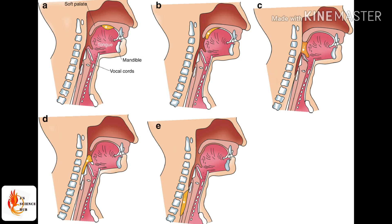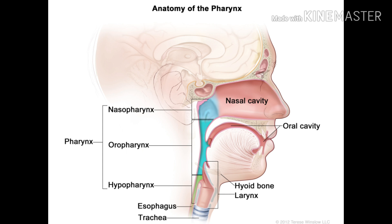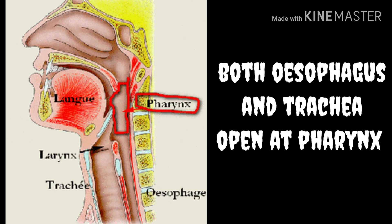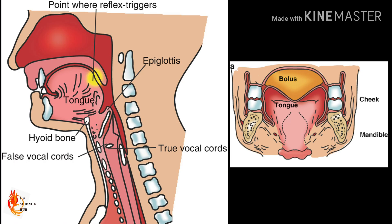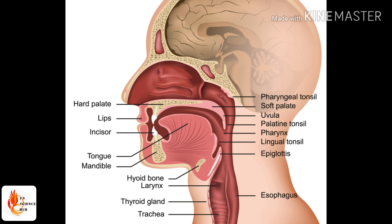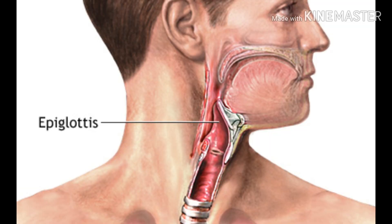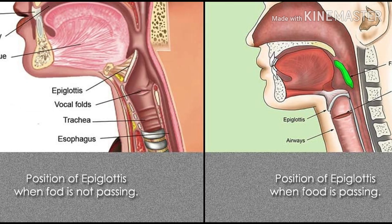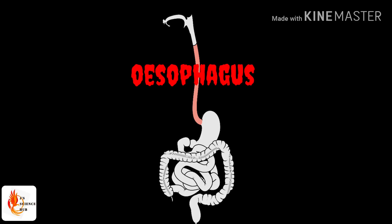Next, food enters the pharynx, which is a common area for both the respiratory and digestive systems. Both the esophagus and trachea are connected to the pharynx. To protect the entry of food particles into the trachea, a muscular flap called the epiglottis blocks the path of the trachea when you swallow food, preventing food particles from entering the respiratory tract.